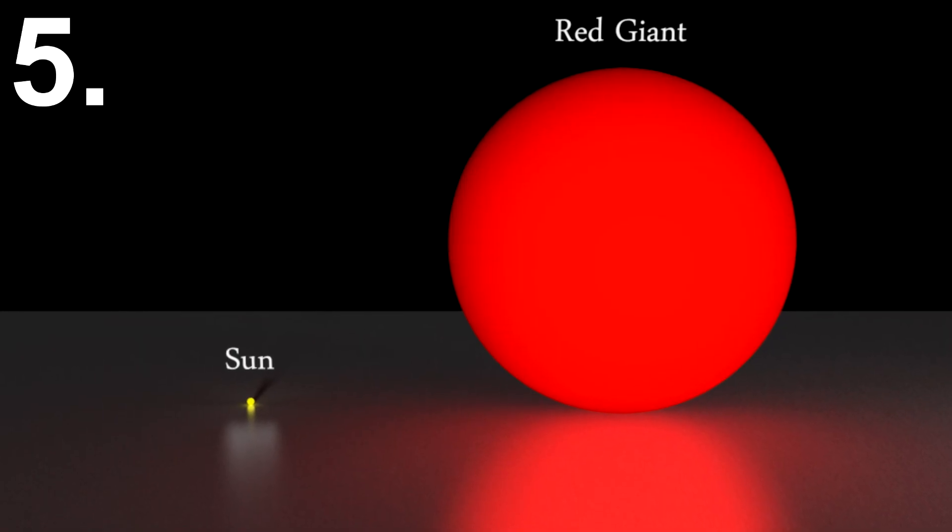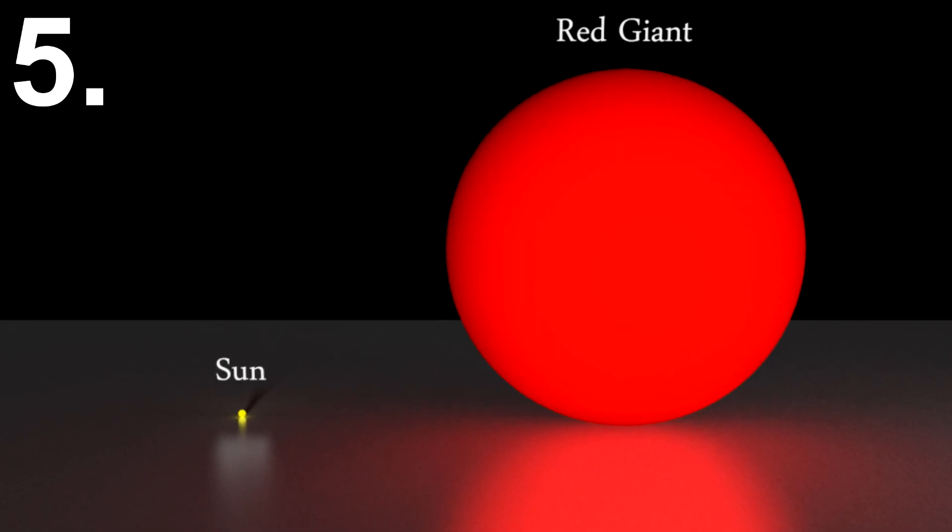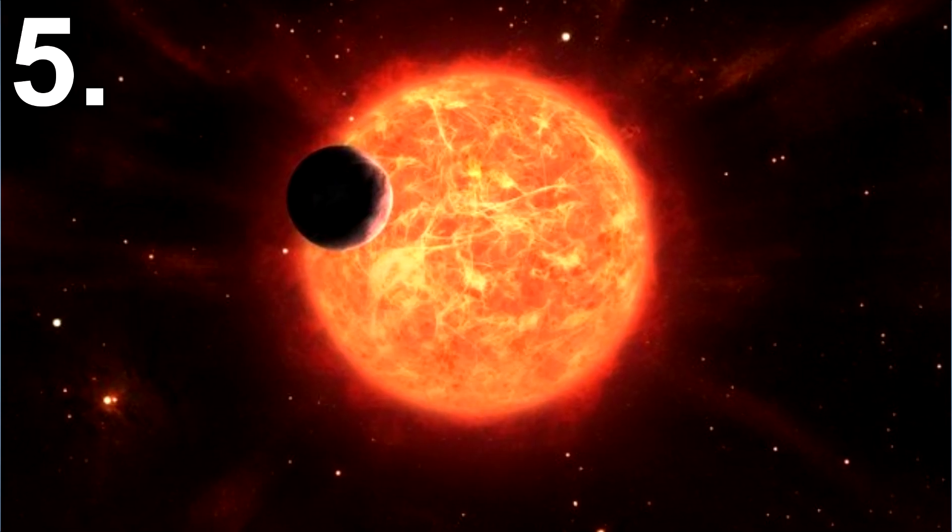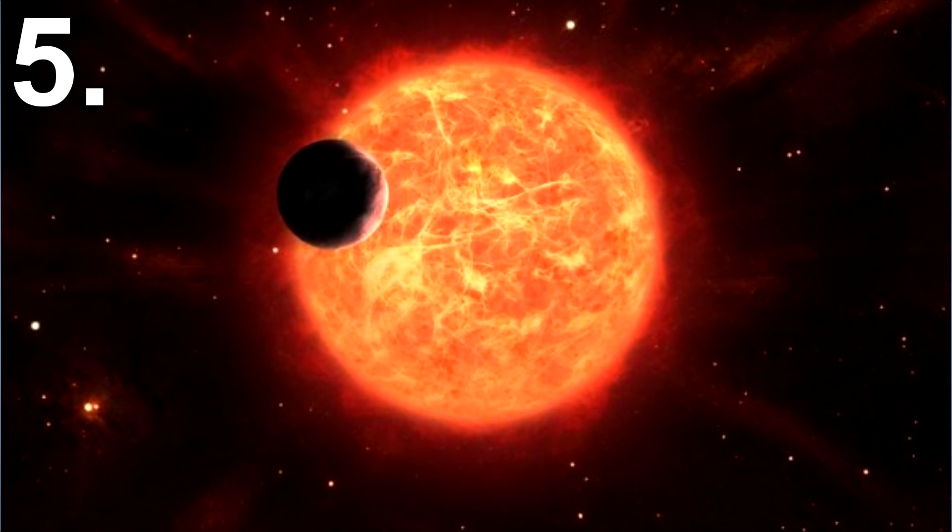Here it will expand and become much brighter for the actual temperature will be lower. At the moment the sun burns between 5,000 to 9,000 degrees Celsius. When it becomes a red giant it will be about 2 to 3,000 degrees.